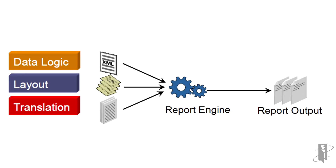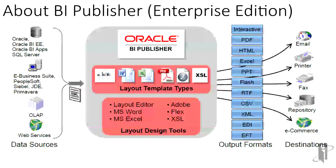FDMEE works on a process of separating out the data logic from the layout and the translation. The FDMEE report engine is an OEM version of Oracle BI Publisher which operates in the same framework. Oracle BI Publisher Enterprise Edition is a much more robust engine than the one within FDMEE. Within FDMEE, our data source is the FDMEE system, layouts are done within Microsoft Word Template Builder, and the output is PDF, HTML, and Excel, with a destination typically being the printer or email from the user's interface.